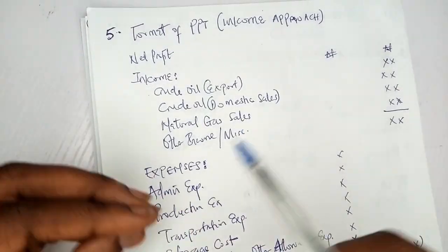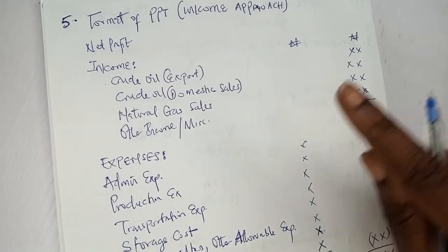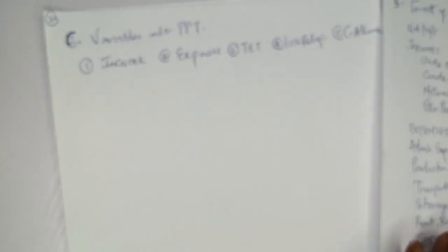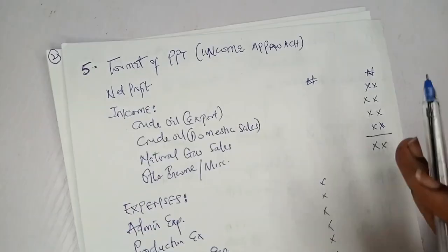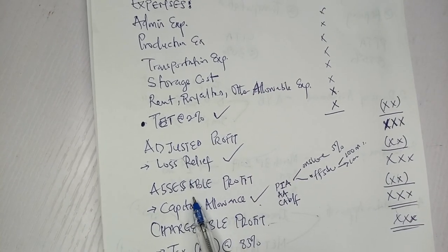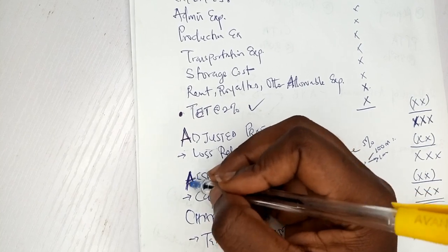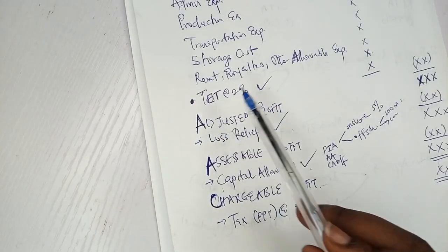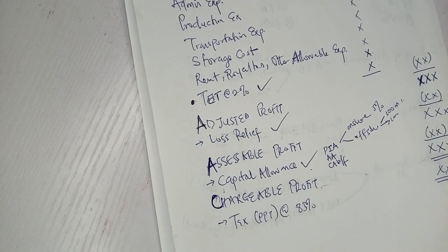To summarize the steps clearly: to get adjusted profit, you must have treated the education tax (debt). To get assessable profit, you must have treated loss relief. To get chargeable profit, you must have applied capital allowance. Once you have chargeable profit, you simply charge tax at 85%. This step-by-step logic is the same whether using the income or net profit approach.